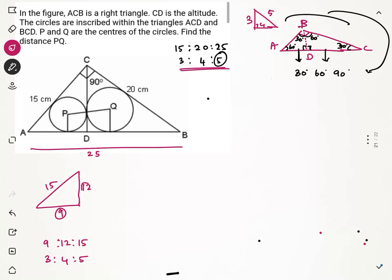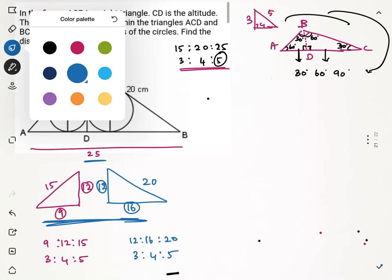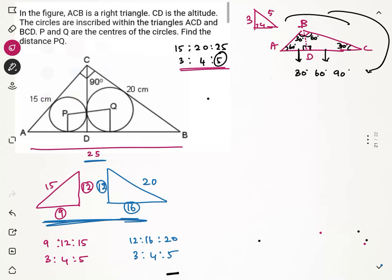So the left side triangle sides are 9, 12, and 15. For the right side triangle, the hypotenuse is 20. The remaining two sides should be 12 and 16 to maintain the 3:4:5 ratio, giving 12:16:20. We can verify: AD + BD = 9 + 16 = 25, which matches our earlier result. So the left side triangle has sides 9, 12, 15 and the right side triangle has sides 12, 16, 20.